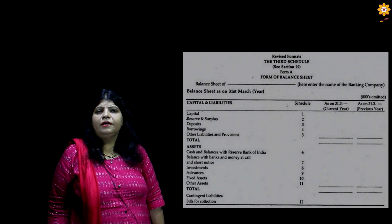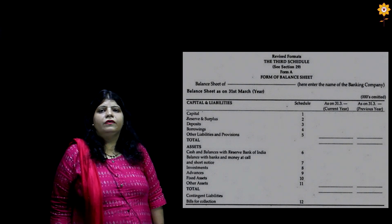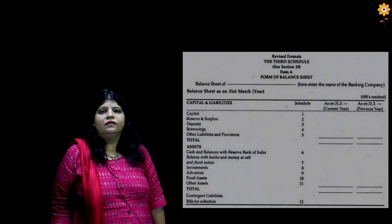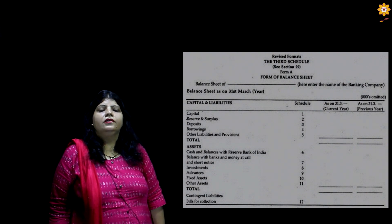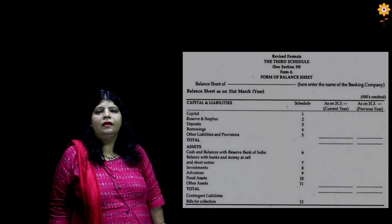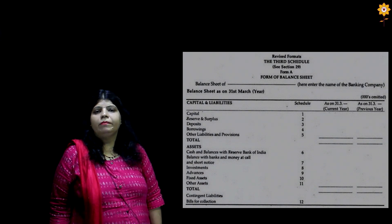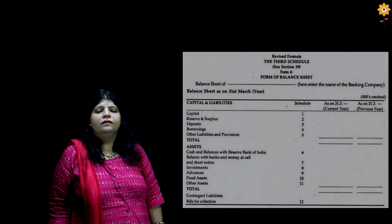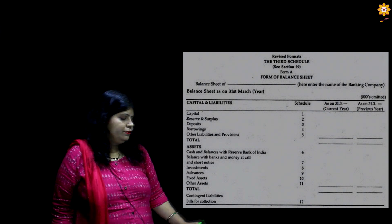The asset side of the balance sheet will include from Schedule 6 to Schedule 11. Schedule 12 is assigned to contingent liabilities. We will now be studying in detail the various schedules of the balance sheet from Schedule 1 to Schedule 12.